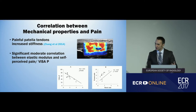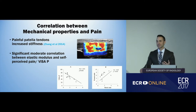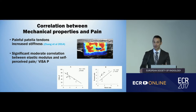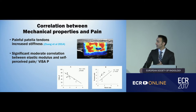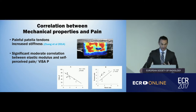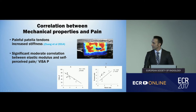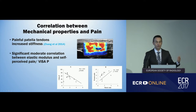From a clinician's point of view, there has been direct correlation between mechanical properties of tendons and pain. In musculoskeletal medicine there's a term called the 'structure disconnect,' where structure doesn't necessarily correlate with pain — as in chronic low back pain, where patients have significant pain but little imaging abnormality. But studies using shear wave elastography are finding a distinct and direct correlation, which is exciting. The Hong Kong Polytechnic group has found significant moderate correlation between elastic modulus and self-perceived pain, and also the VISA-P pain and function score.